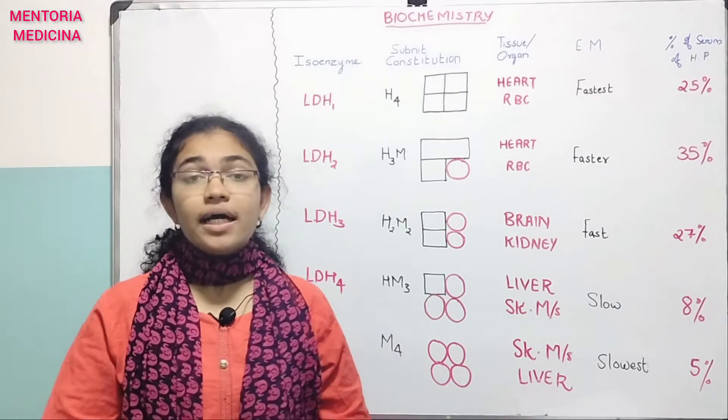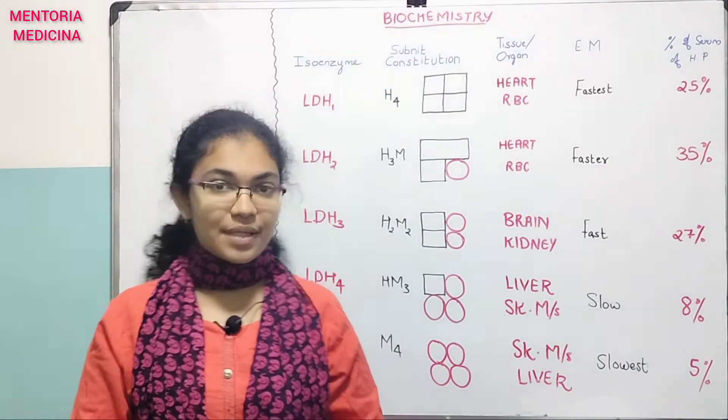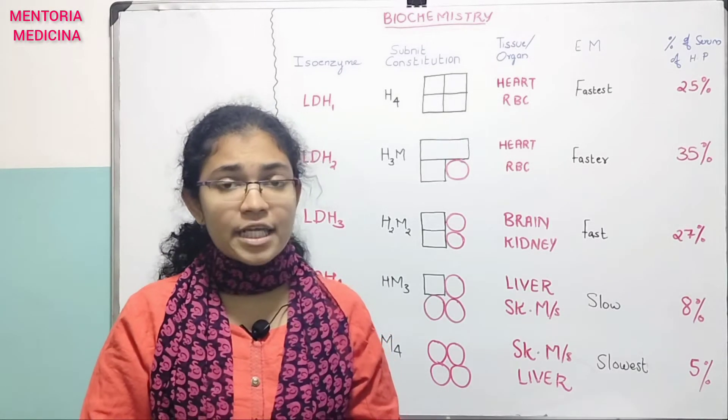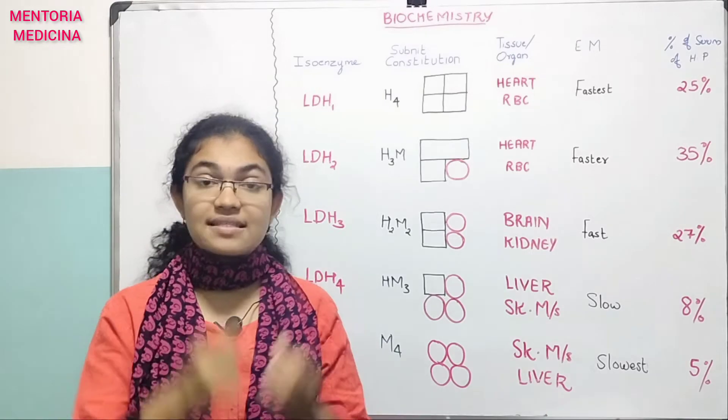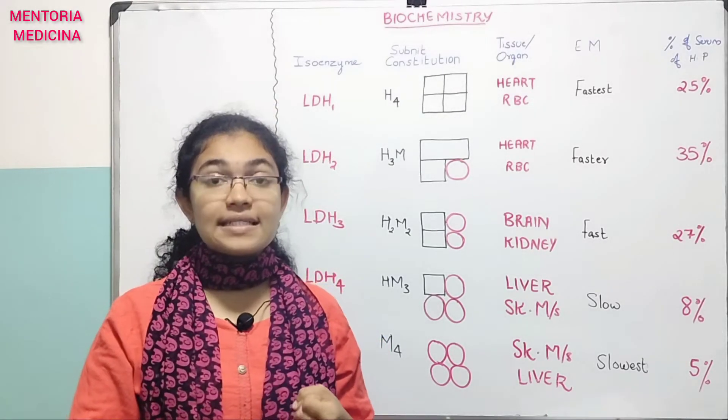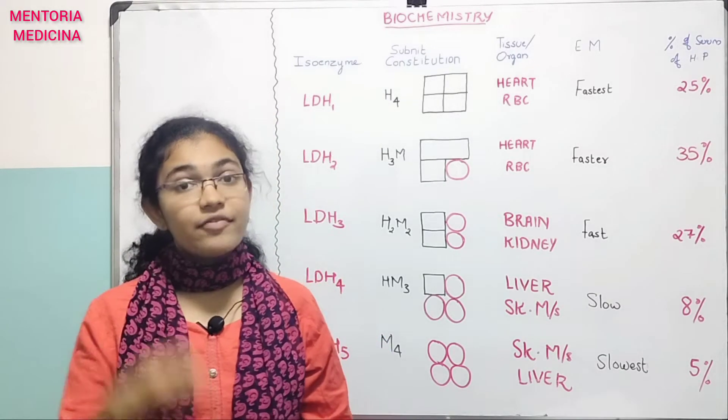Let's go to this example. Physically distinct. What is a physical property? Quaternary structure, electrophoretic mobility, Km value, Vmax. This is the same.